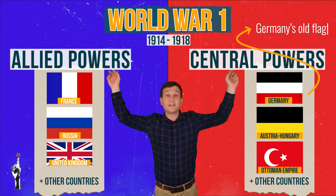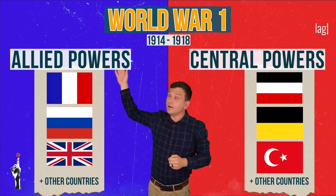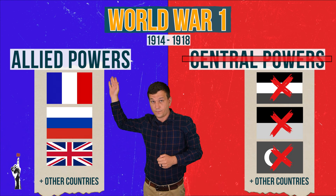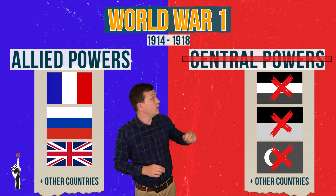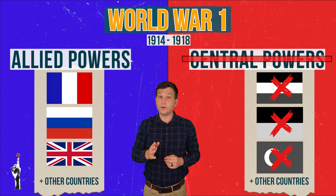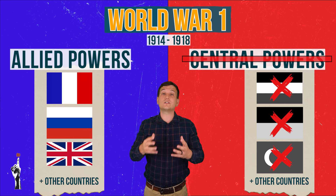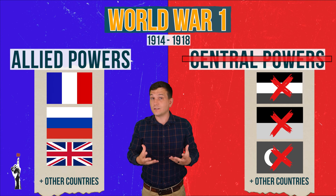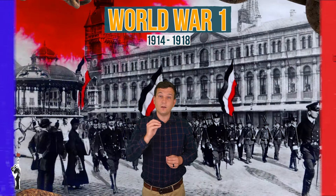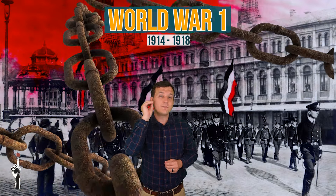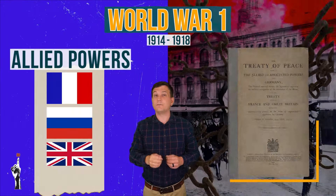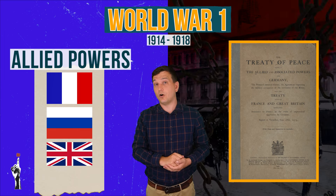The Allied Powers won the First World War. Take note that Germany was on the losing side, and not only were they on the losing side, they were also considered the culprits for starting the First World War. Therefore when they lost, they were also most punished by the Allied Powers — and how were they punished? By the Treaty of Versailles.